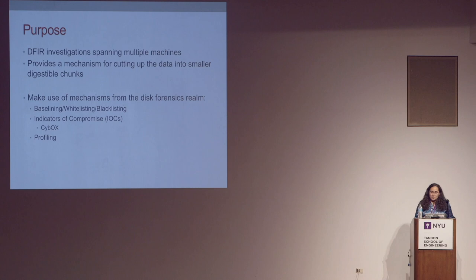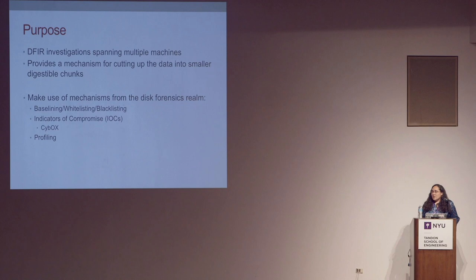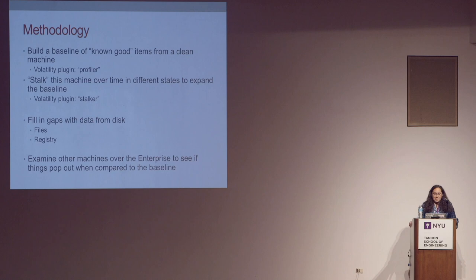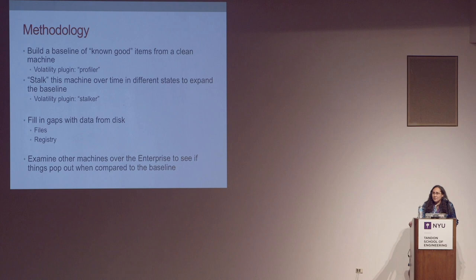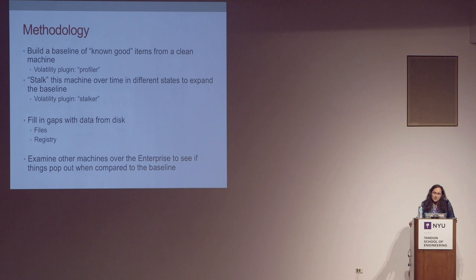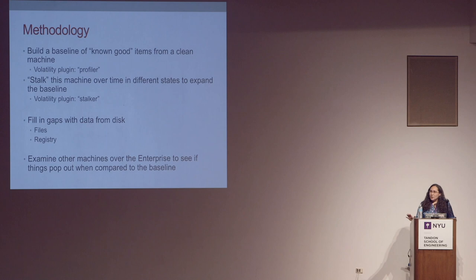We can use things from the disk forensics world like baselining, whitelisting, and blacklisting. We can also look for indicators of interest — indicators of compromise — things we know a priori that we're looking for. The basic methodology is you have some known good profile from a machine that is a golden base image. Within this profile you'll have various artifacts like running processes, loaded DLLs, imports, exports, and even injected code segments that are normal to the operating system.